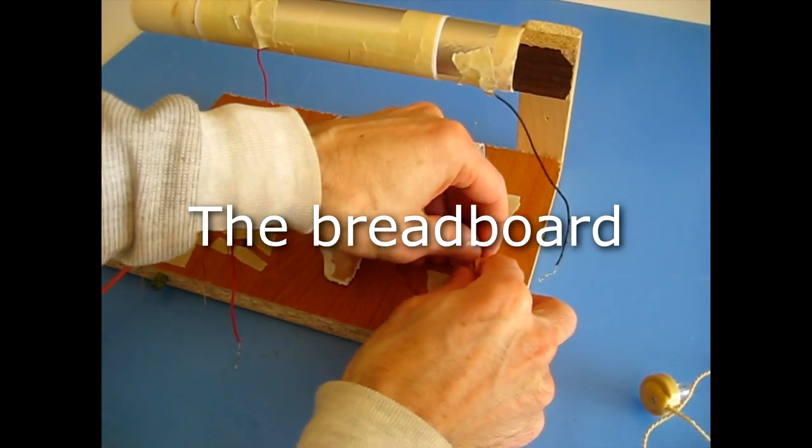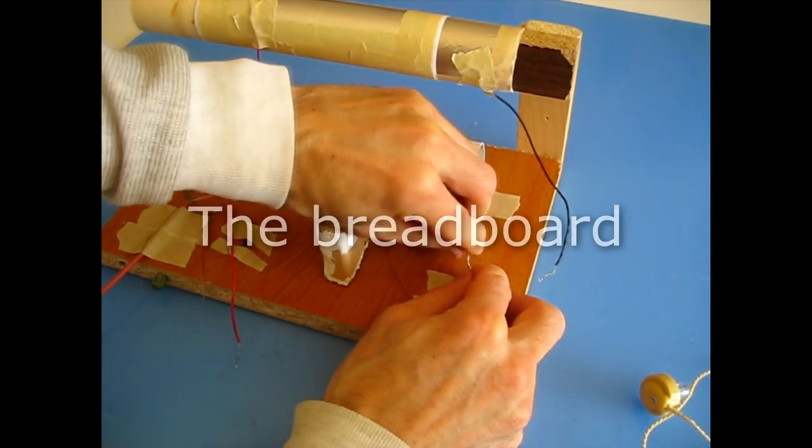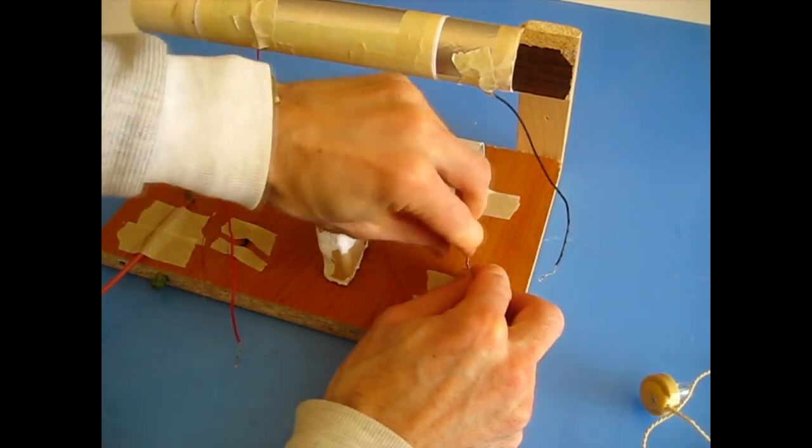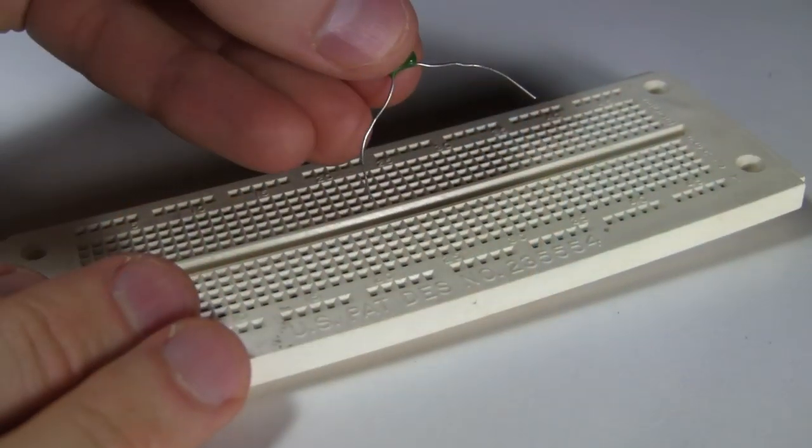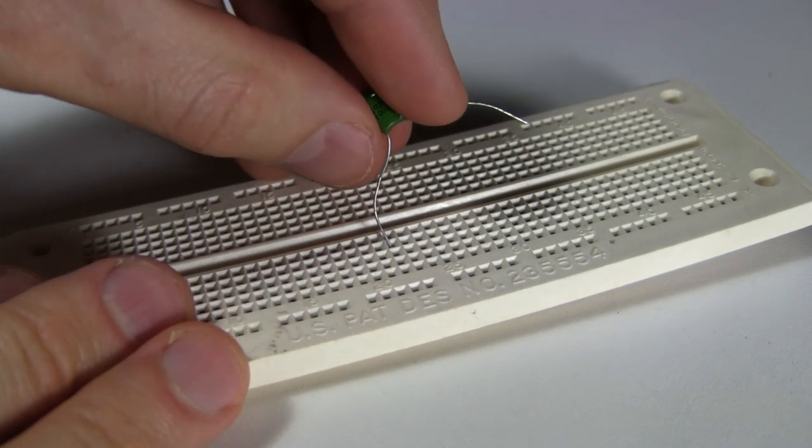In my how to make a crystal radio video, I connected things together by twisting the wires together. But that's a pain to undo and redo. With the breadboard, you simply plug the wires of the various parts into the small holes.